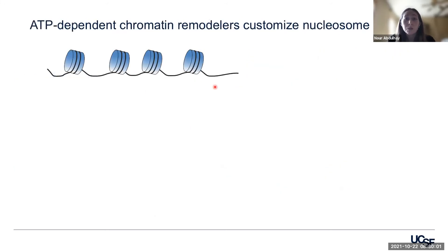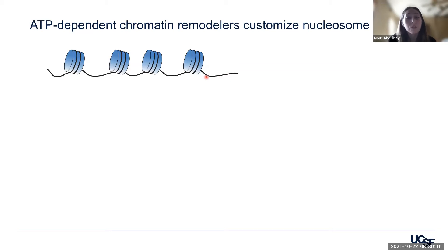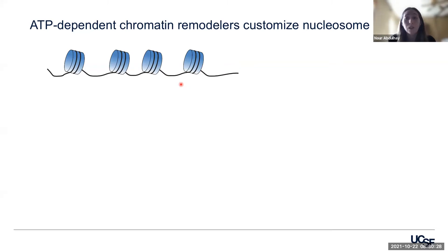So how exactly are nucleosomes positioned in such a customized manner? We know that there are many epigenomic regulators that drive gene expression, such as DNA methylation or histone post-translational modifications, but today I'll be focusing on ATP-dependent chromatin remodelers. This large family of multi-subunit proteins harnesses the power of ATP through a functional ATPase to modulate nucleosome positioning, and they also carry out specific biological functions through accessory protein subunits.